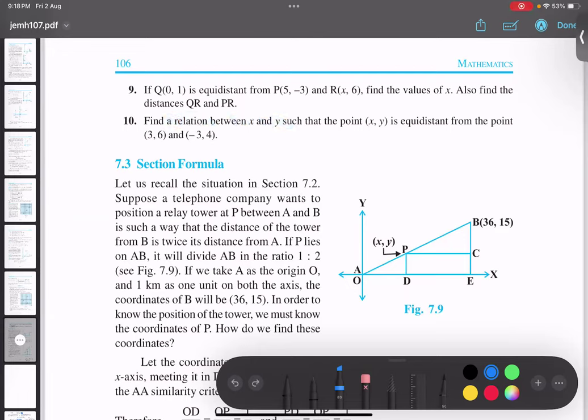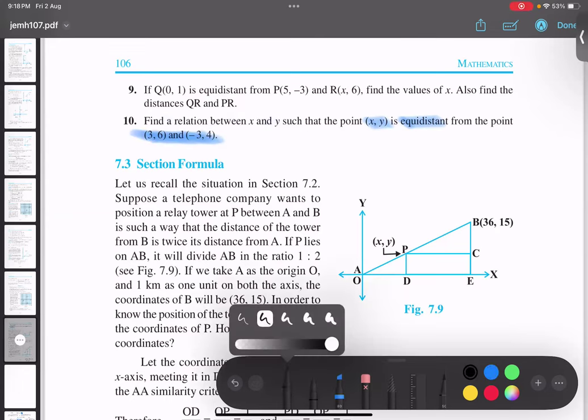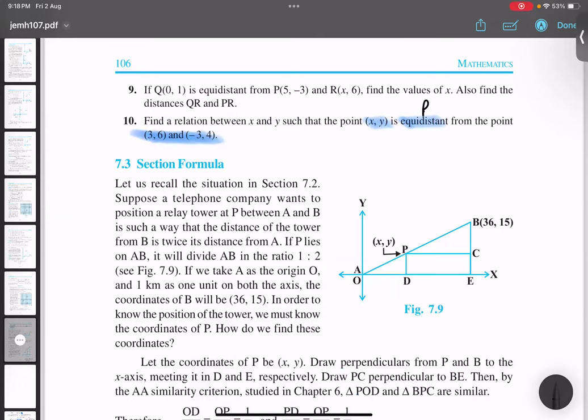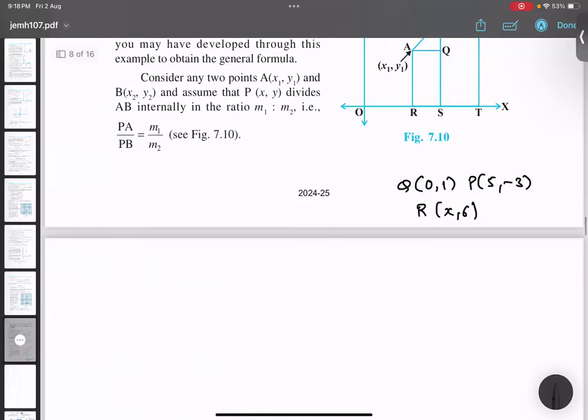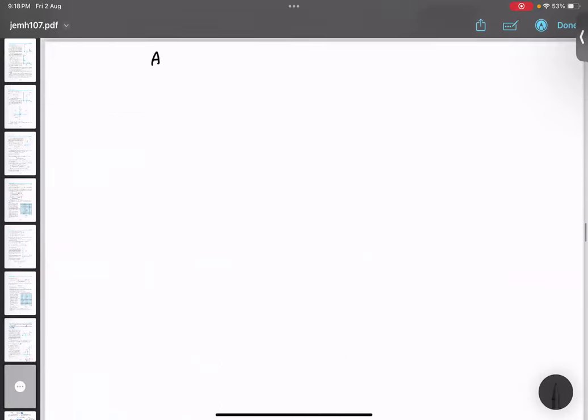It says that x, y is equidistant from these two points. So that means let me just take this as point B. This is A, this is B. So as P point is equidistant from A and B, we will take according to the question PA equals to PB.